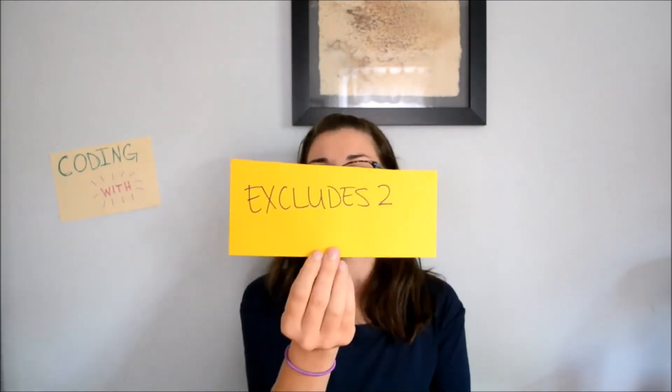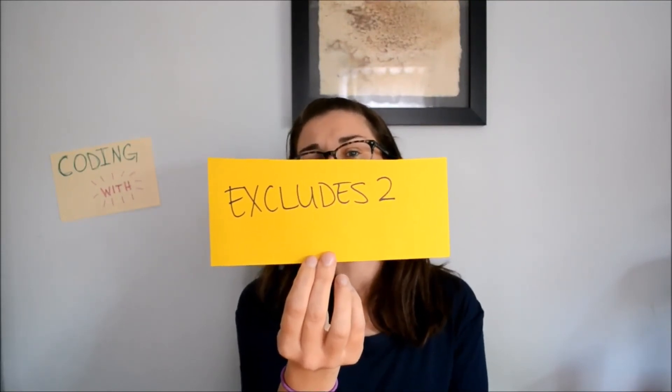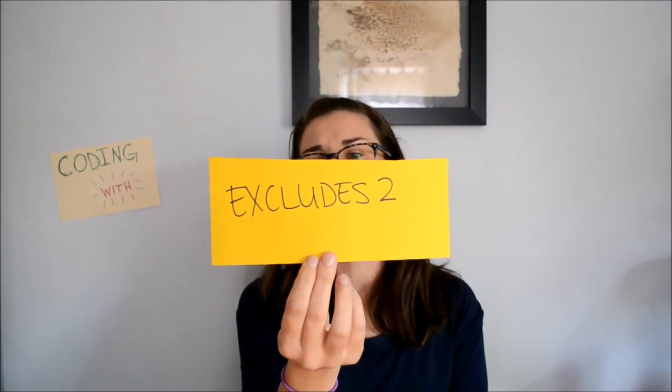Then we have excludes two. This is two codes are applied when both conditions are present because the list of excludes two terms are not included in one code. So you will also see excludes two and then a list. This is basically meaning that anything on this list is also included, but you need that second code because it is not provided in this main diagnosis code that you are searching for. It's another way of saying code also if anything on that list is also present.